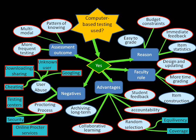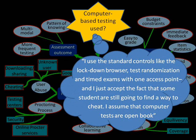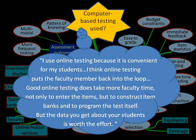All participants currently use computer-based testing in both face-to-face and online courses. All participants mentioned concerns about user abuse and cheating and the use of proctoring. However, there was no clear consensus about whether proctoring is essential or the best way to prevent cheating in computer-based testing. A new category of advantages — including student feedback, collaborative learning, and random item selection — emerged from these data, which was not evident in the data related to the Scantron form. One participant said: 'I use standard controls like the lockdown browser, test randomization, and timed exams with one access point. I just accept the fact that some students are still going to find a way to cheat. I assume that a computer-based test is an open book test.'